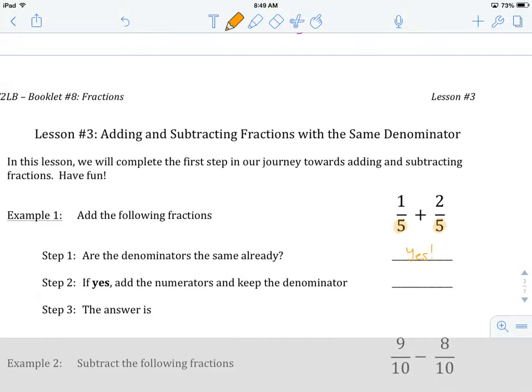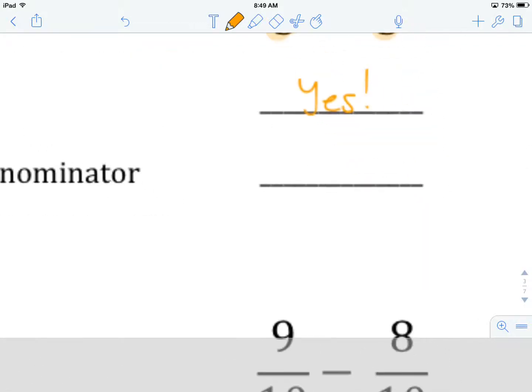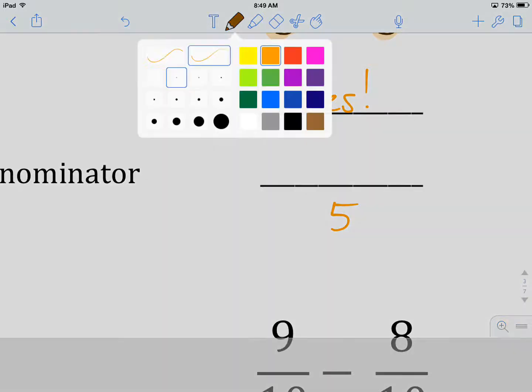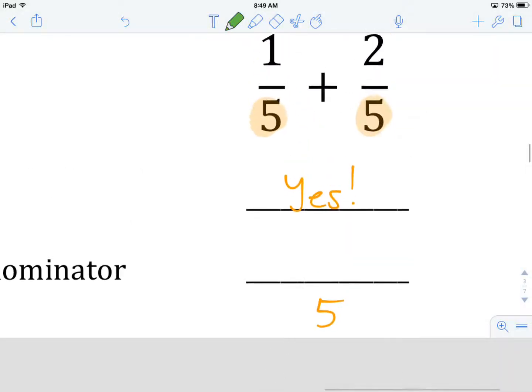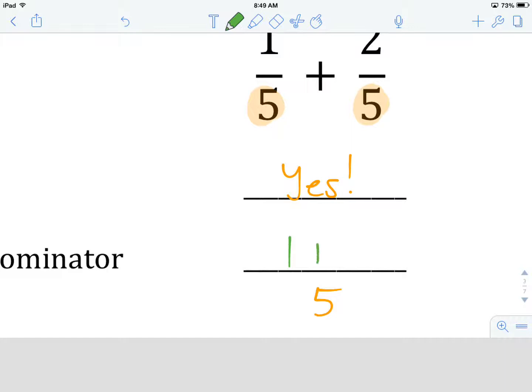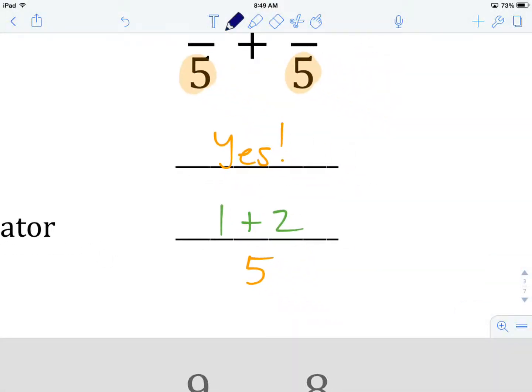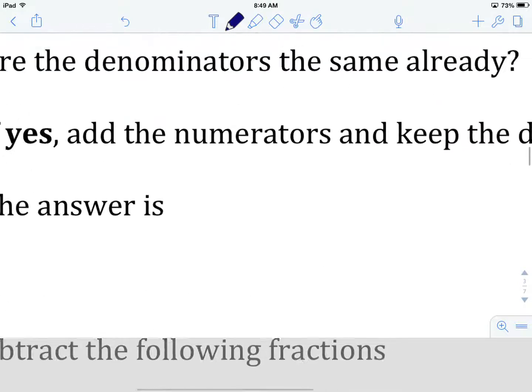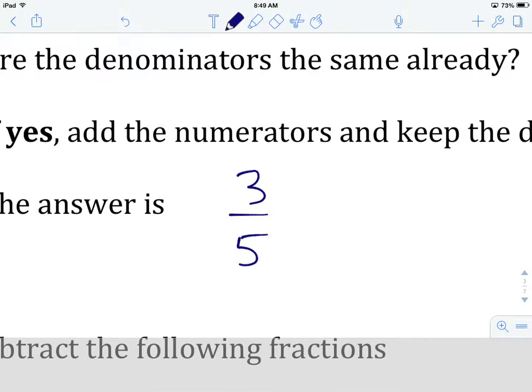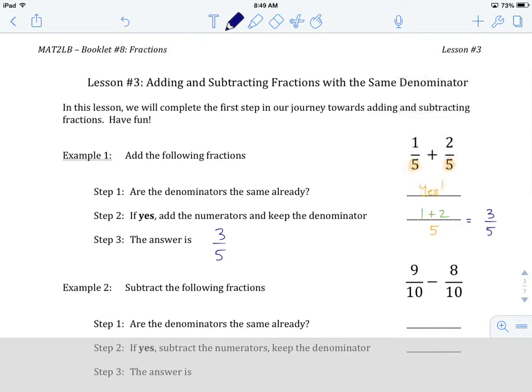If yes, if they are the same, go to step number 2, which says add the numerators and keep the denominator. The denominator we're going to keep, that's going to be our 5, and we are going to add our numerators. Our numerators were 1 plus 2, and we're going to add those together. So we have 1 plus 2, that gives us 3, and our denominator stays the same. Our answer then is 3 over 5, or 3 fifths.